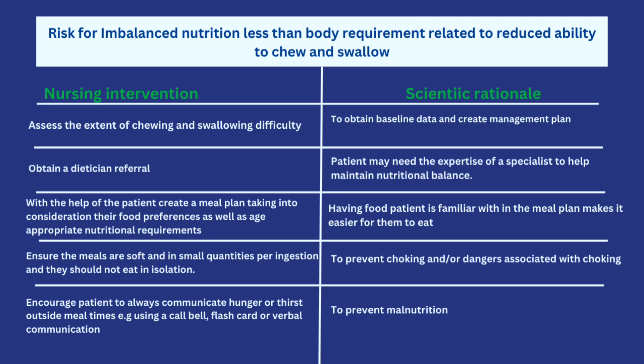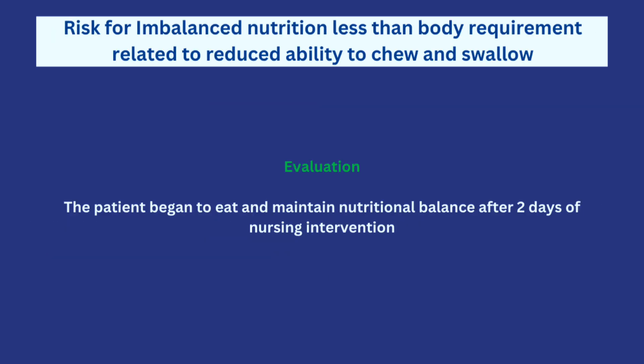If the patient eats in isolation and chokes with nobody there, that is very dangerous. Finally, encourage the patient to always communicate hunger or thirst outside meal times using a call bell, flashcard, or verbal communication. In a hospital setting where meal times may be fixed, the patient should know how to communicate outside those times so they don't become malnourished. The evaluation is that the patient began to eat and maintain nutritional balance after two days of nursing intervention — always keep the timeframe in your objectives in mind.